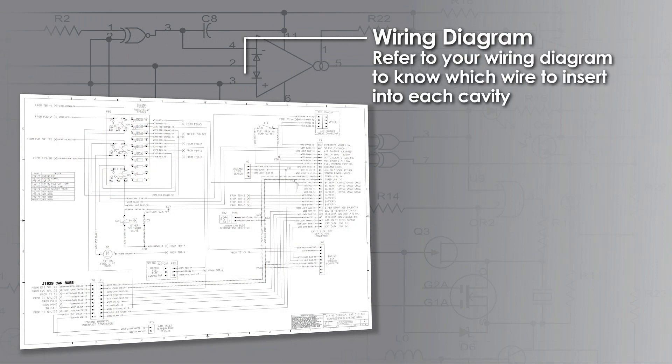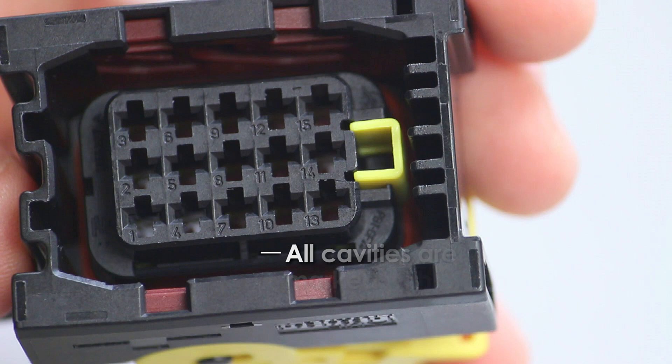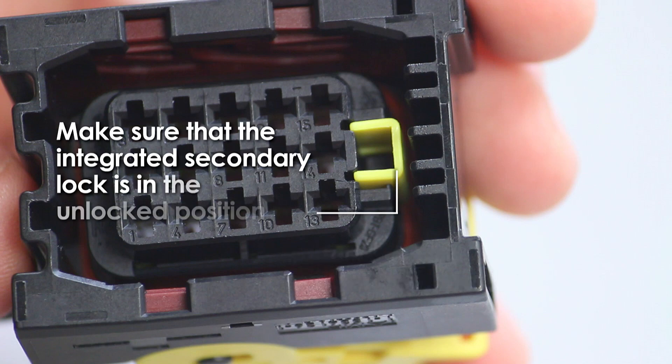Refer to your wiring diagram to know which wire to insert into each cavity. Cavities are marked with numbers. Check that the integrated secondary lock is in the unlocked position.